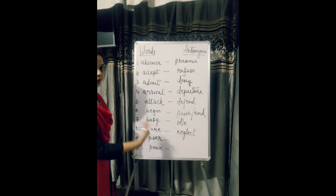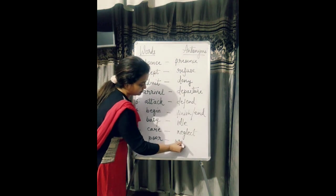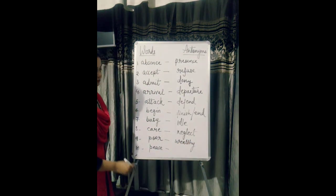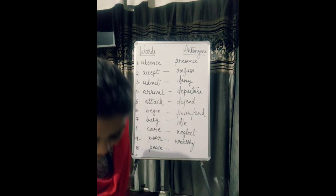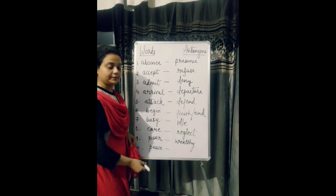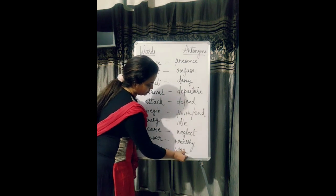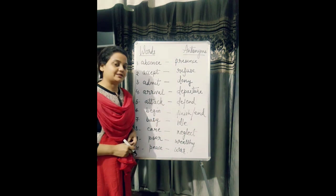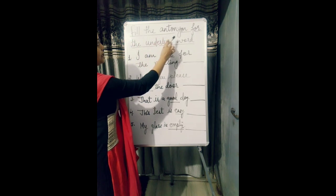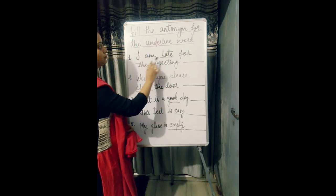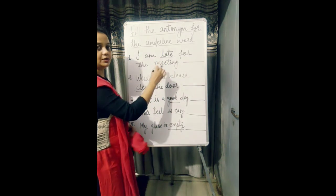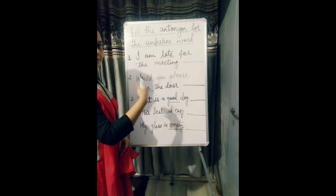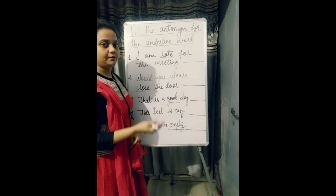Then poor — the opposite of poor is wealthy. Then peace. So these are some words we can say are the antonyms of each other. Now there's one exercise to make it more clear — you have to fill the antonym for the underlined word. In every sentence there is a word which is underlined and you have to replace that word with the antonym, the opposite word.